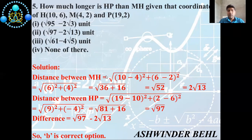First we find the distance MH: √[(10 − 4)² + (6 − 2)²]. So 10 − 4 = 6 and 6 − 2 = 4. Then 6² = 36 and 4² = 16. So 36 + 16 = 52, and √52 = 2√13.